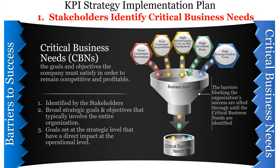Step 1: Stakeholders identify critical business needs. Critical business needs are the goals and objectives the company must satisfy in order to remain competitive and profitable. They are identified by the stakeholders, are broad strategic goals and objectives that typically involve the entire organization, set at the strategic level with a direct impact at the operational level. Such barriers to success include poor customer retention, poor customer acquisition, high maintenance cost and old equipment, high accident rate, and high transportation cost.